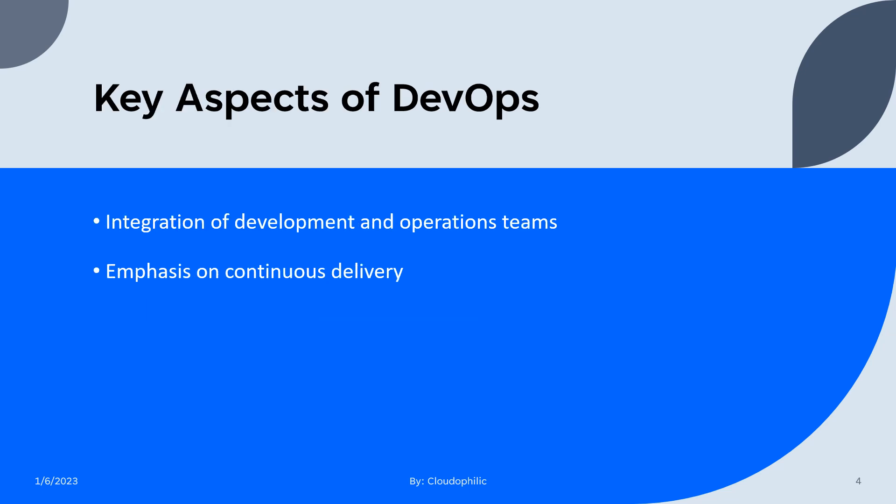One key aspect of DevOps is the integration of development and operations teams. In a traditional software development model, these teams often work separately, which can lead to delays and inefficiencies. With DevOps, development and operations teams work together throughout the entire development life cycle — from design and development to testing, deployment, and maintenance — improving collaboration and communication.